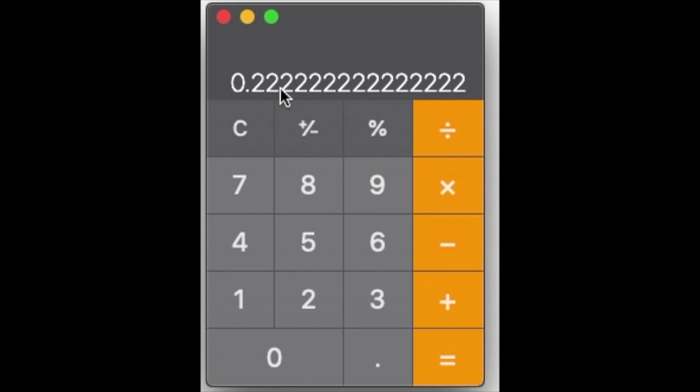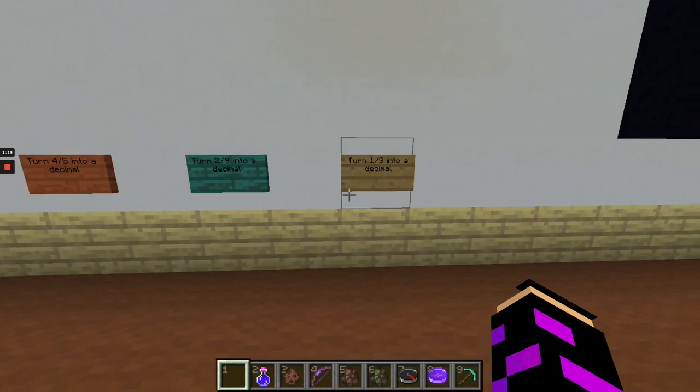Oh my gosh, look at all those twos, 0.222222. So that's why instead of making you write it all out, once you get like two or three of the numbers repeating, just put a bar over it.